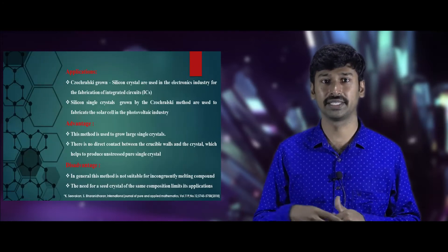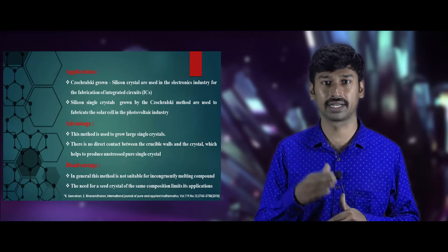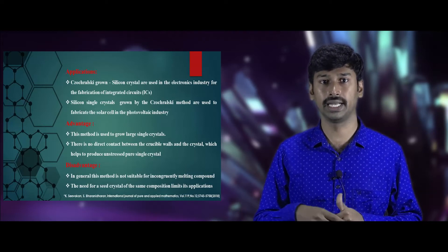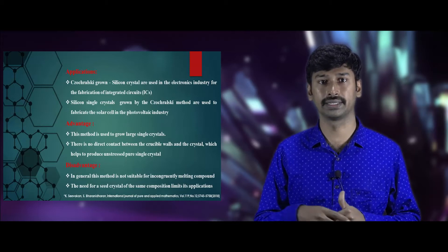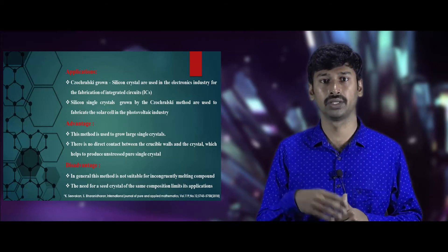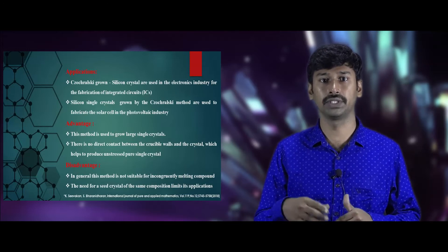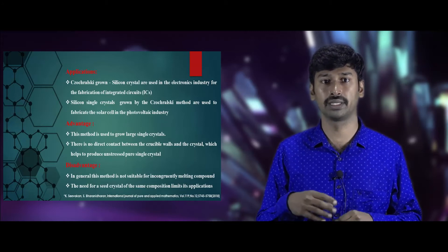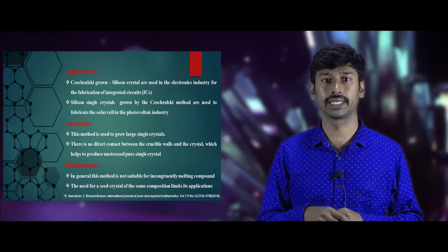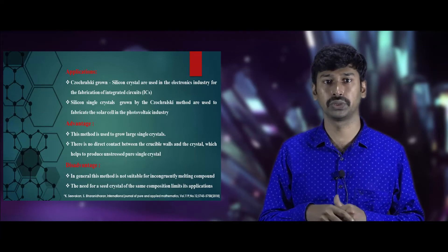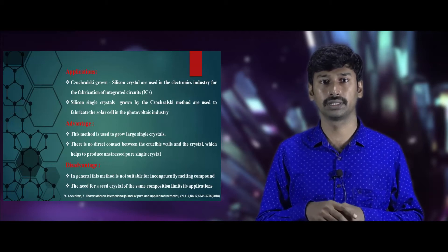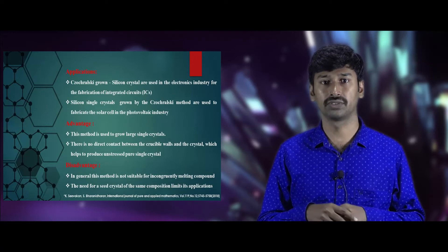The silicon crystals grown by the Czochralski method are cut and sliced into wafers used for fabrication of ICs in the electronics industry, and also used to fabricate solar cells in the photovoltaic industry with high efficiency. Advantages: this method can produce large diameter single crystals, and there is no direct contact between the crucible wall and the grown crystal, producing unstressed pure single crystals. Disadvantages: this method is not suitable for incongruently melting compounds, and the need for seed crystals limits its application.